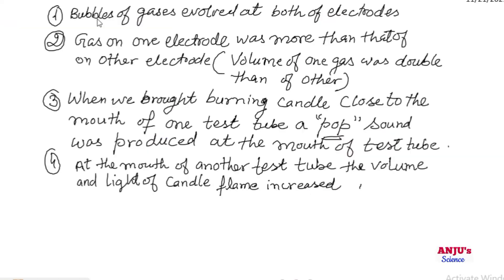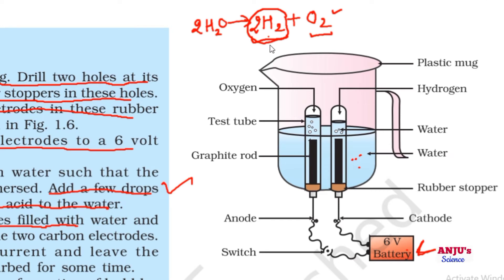Third observation: when we brought a burning candle close to the mouth of one test tube, a pop sound was produced. We know that when hydrogen gas burns, a pop sound is produced. Fourth observation: the light of the candle flame increased because oxygen helps in burning, so the volume of the candle flame increased.